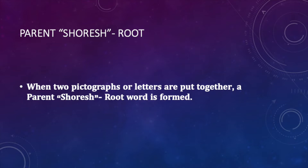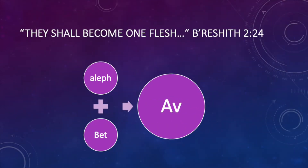Here's a basic example: Aleph plus Bet equals 'Av.' Put those two together and you have what they call a father, as we talked about in our last teaching. I use the scripture Bereshit 24, which is Genesis, to illustrate that 'the two shall become one' — that concept is applied to the Hebrew language.